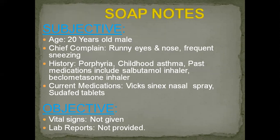In the SOAP notes, the subjective section includes: age 20 years, chief complaint of runny nose, watery eyes, and frequent sneezing. History includes porphyria — a debilitating condition starting with severe pain in the abdomen, back, and limbs — and childhood asthma. Past medications include salbutamol inhaler and beclomethasone inhaler due to his history of childhood asthma.